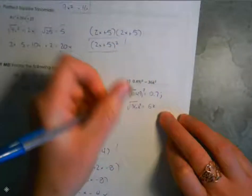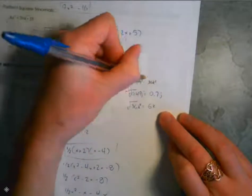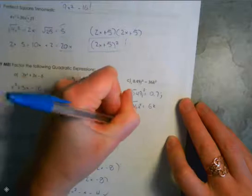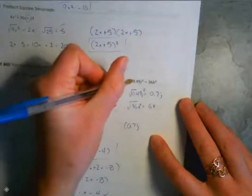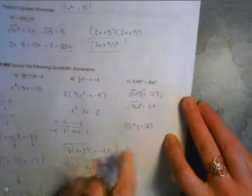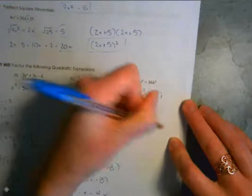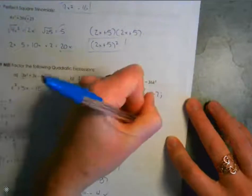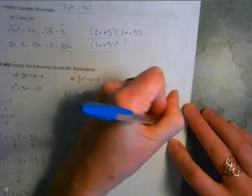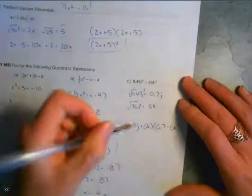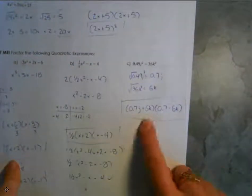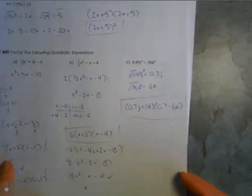Now we have our terms for our brackets. Remember, because we have a negative sign, we need one bracket where we add the two terms and one where we subtract: 0.7j plus 6k times 0.7j minus 6k. That's your final answer for that one. If you want, you can multiply it all out and double-check, but that should give you the correct answer.